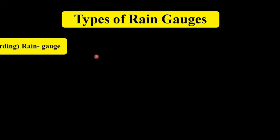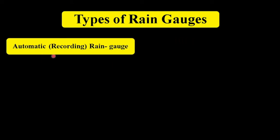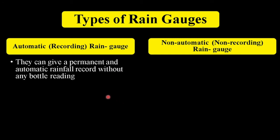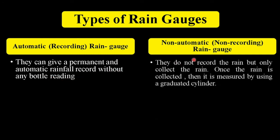Now, types of rain gauges. There are two types: automatic rain gauge and non-automatic rain gauge. As the name suggests, the automatic rain gauge gives a permanent and automatic rainfall record without any manual reading, while the non-automatic rain gauge does not record the rain — it only collects it. Once the rain is collected, you can measure it using a graduated cylinder.